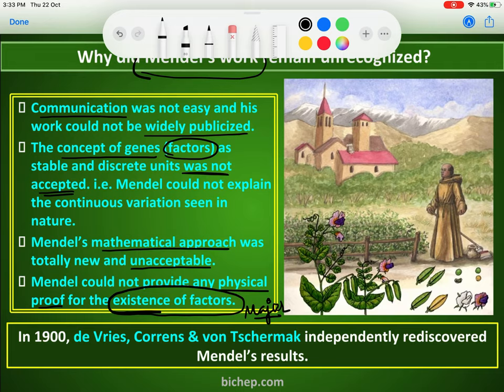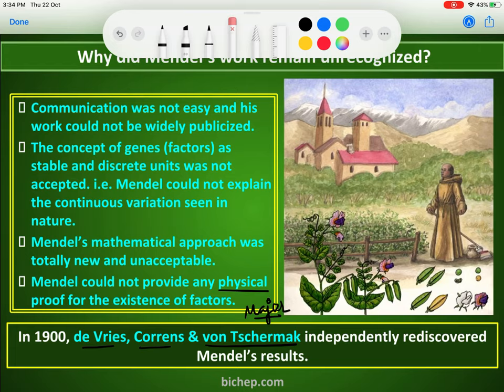At the time of Mendel there was no technical advancement with reference to experiments. After the 19th century, in 1900, de Vries, Correns, and von Schoenbach independently rediscovered Mendel's results. Mendel's experiments were reformed and rearranged, and they observed many different aspects of the same experiments that Mendel had done. All three — de Vries, Correns, and Cermar — have done this experiment, which we have already discussed in earlier lectures.